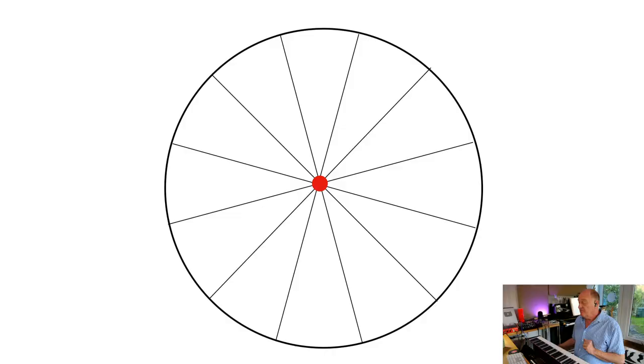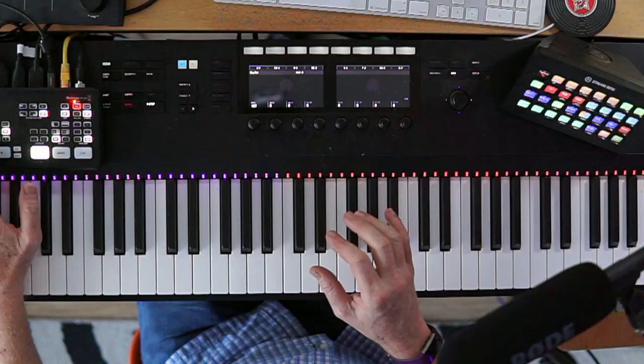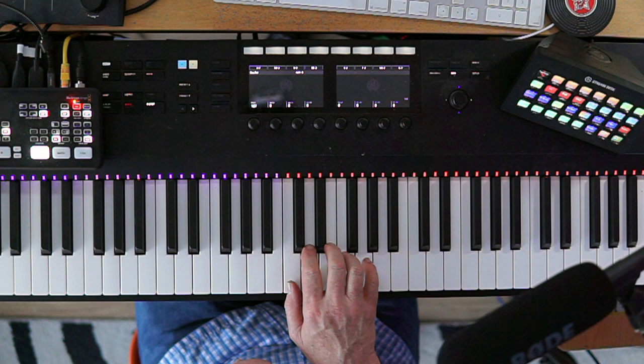So let's put middle C at the top of the circle of fifths. How you build the circle of fifths is relatively straightforward as long as you know how to do scales. So let's start with C major. We're going to go up five notes up the scale of C major.